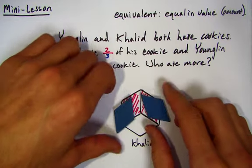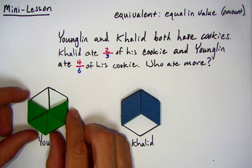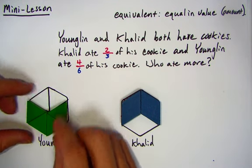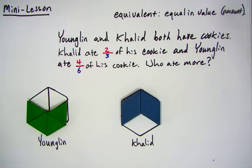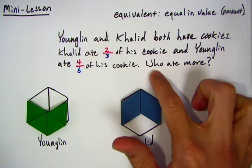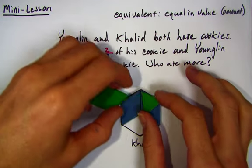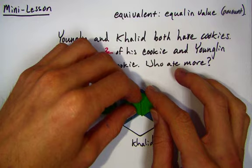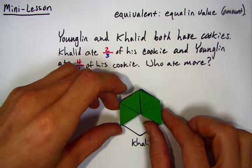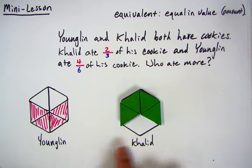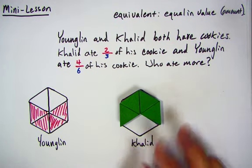That they ate equivalent amounts. So we can see that these fractions are equivalent: two-thirds and four-sixths. To answer our question, they both ate the same amount because these are equivalent fractions. Comparing with Young Lin's, you can see that they are exactly the same.